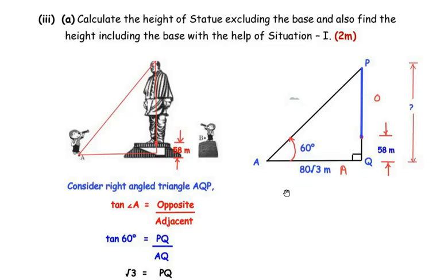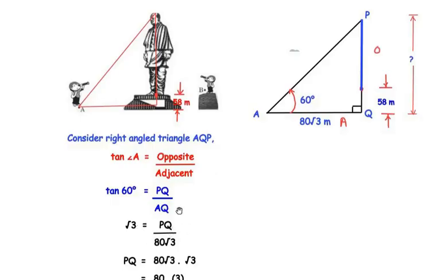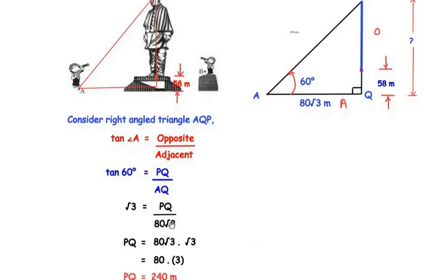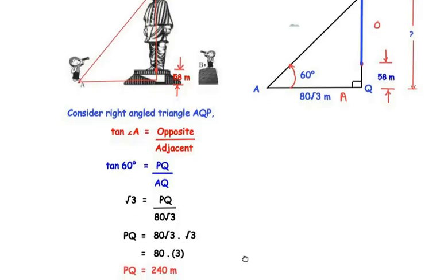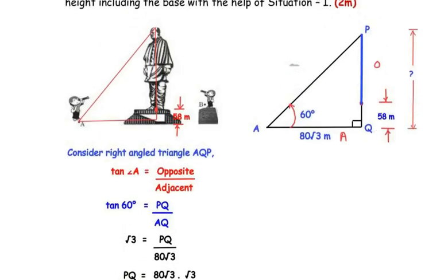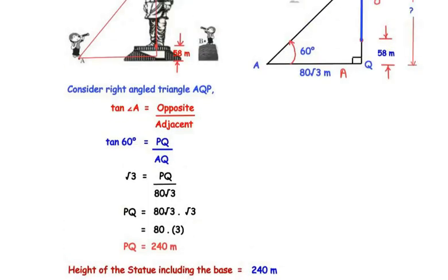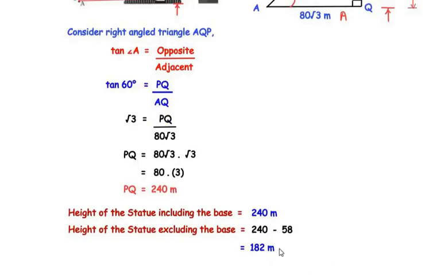Consider right-angled triangle AQP. tan(∠A) = opposite/adjacent. Angle A was given as 60 degrees in situation 1, so tan(60°) = PQ/AQ. Since tan(60°) = √3 and AQ = 80√3, we get PQ = 80√3 × √3 = 80 × 3 = 240 meters. So the height of the statue including the base is 240 meters. Subtracting the base of 58 meters: 240 − 58 = 182 meters, which is the height of the statue excluding the base.